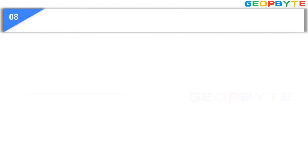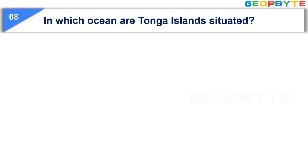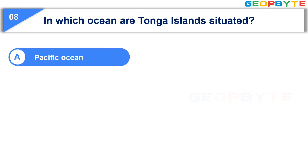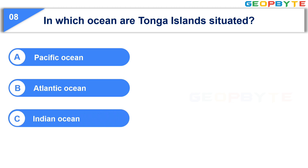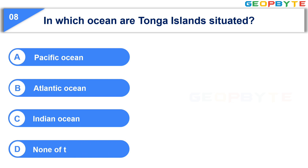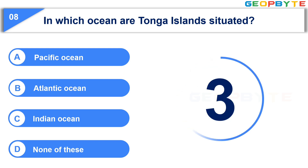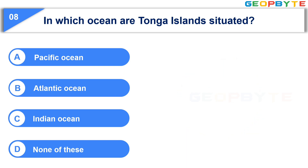The eighth question is: in which ocean are Tonga Islands situated? Option A: Pacific Ocean. Option B: Atlantic Ocean. Option C: Indian Ocean. Option D: None of these. Your time starts now. Your time is up and the correct answer is Option A: Pacific Ocean.